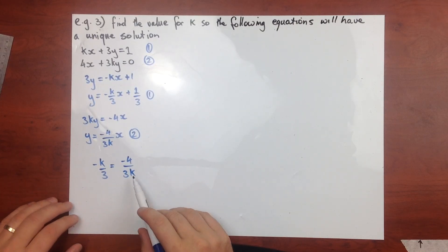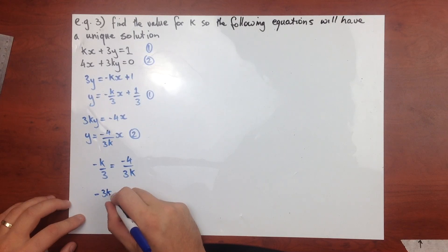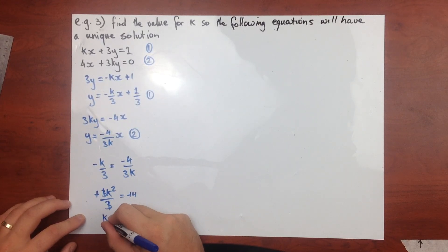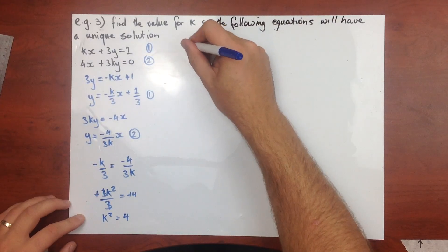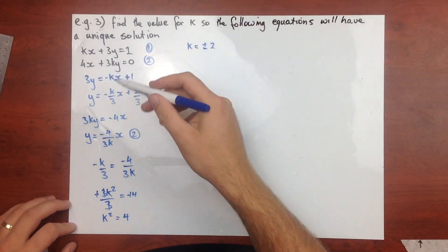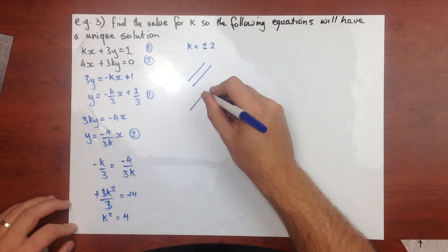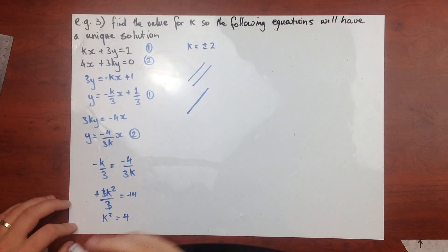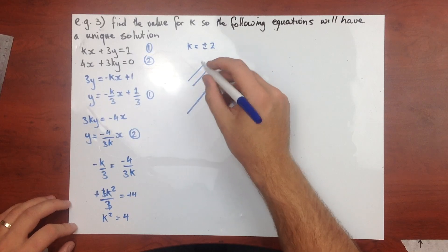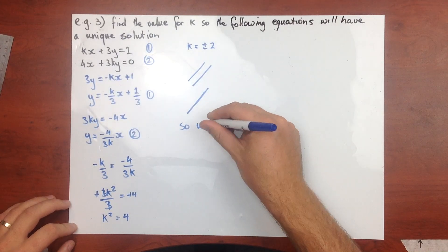Cross-multiplying gives negative 3k squared over 3 equals negative 4. The 3s and negatives cancel out, leaving k squared equals 4, so k equals plus or minus 2. When the gradients are equal, we get either no solutions (parallel lines) or infinitely many solutions (coincident lines) — neither is a unique solution.